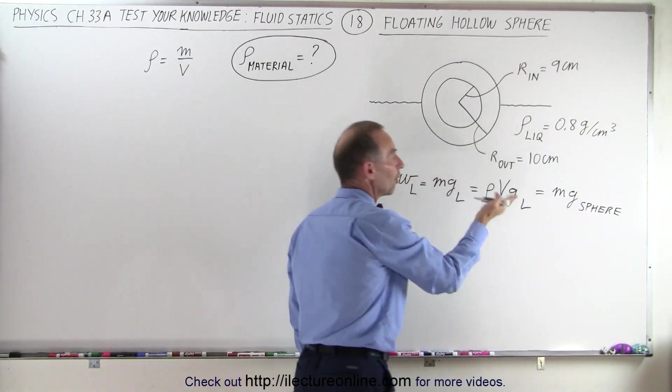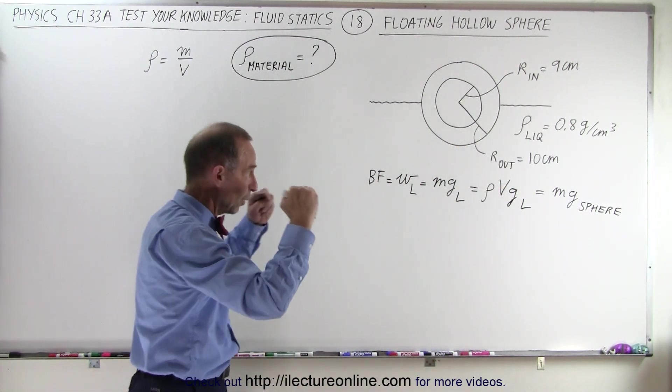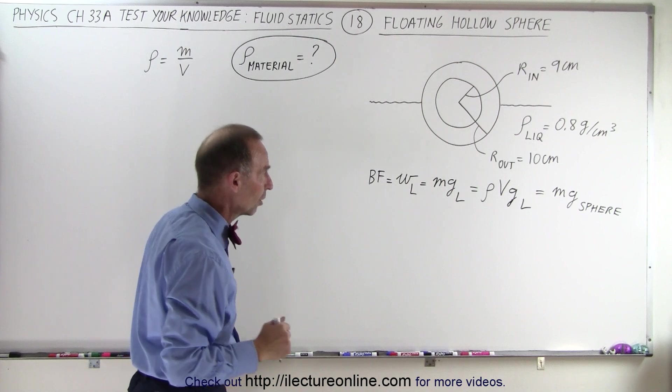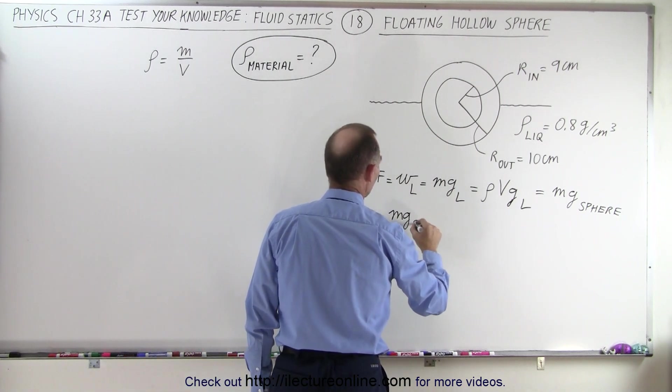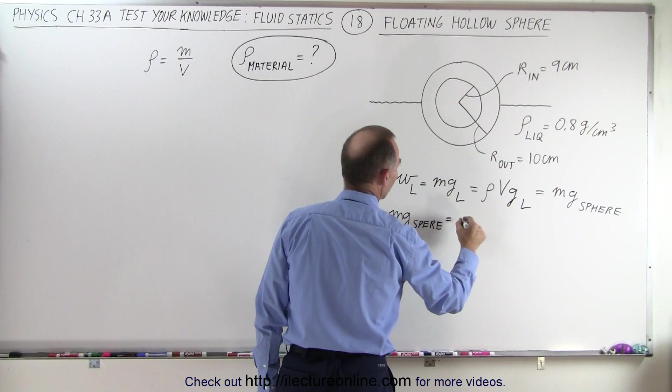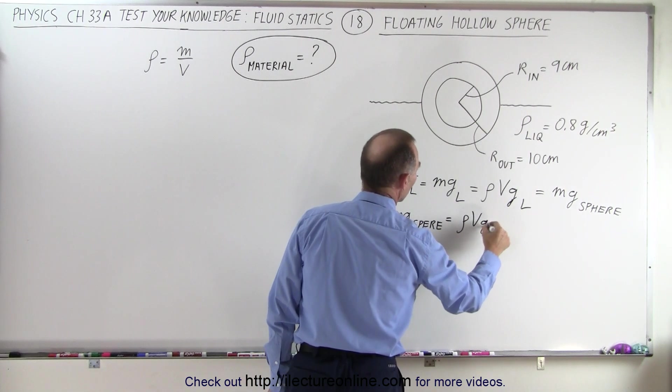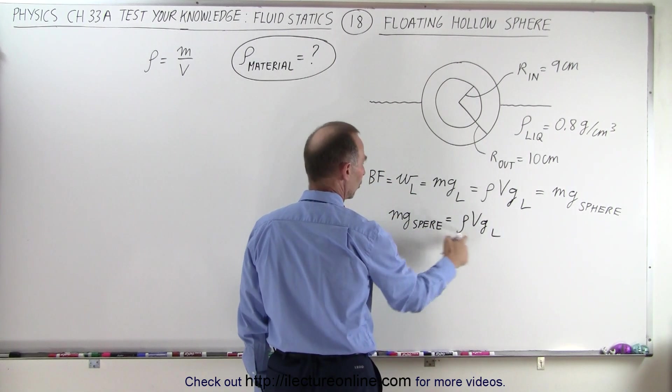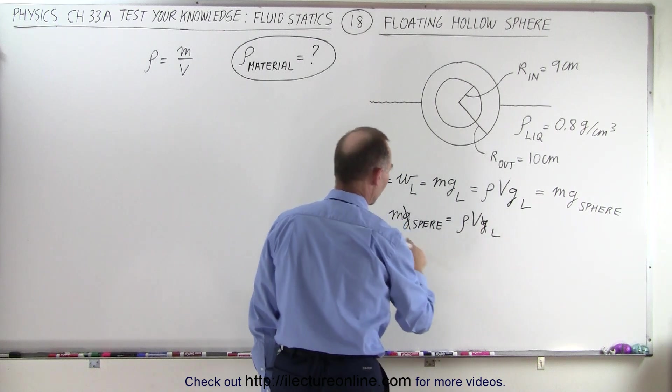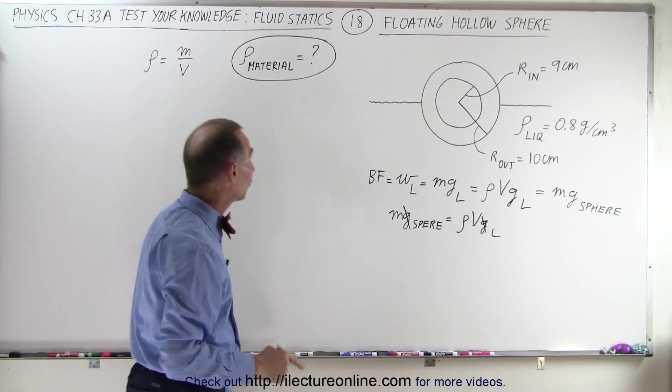So the buoyancy force must equal the weight of the sphere once we have equilibrium reached, which means that the mg of the sphere must equal the rho vg of the displaced liquid. Notice I can cancel g's on both sides, so that's how we find the mass of the sphere.